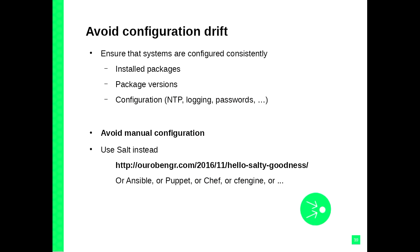Configuration drift is really important. Admins get things wrong. If you manually edit your servers, you're doing it wrong. Use Salt, Ansible, Puppet, CFEngine — whatever. But don't manage your servers manually. Put it under revision control and roll them out automatically. This is 2017 — there's really no excuse. Otherwise, I have no sympathy.